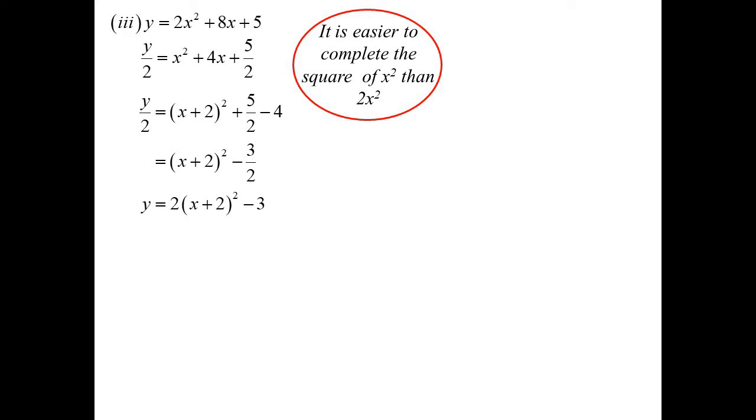So half the coefficient of x is two. So I must have x plus two all squared, but add back in the two squared, so the four. That becomes minus three on two. But now I'll get it back to y equals. So now I'll multiply everything by two.